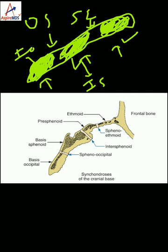For MCQ purposes, remember when these synchondroses get fused. The intrasphenoidal one gets fused at birth. The intraoccipital one fuses by 3 to 5 years. The sphenooccipital one fuses by 20 years.